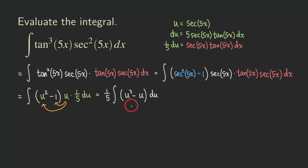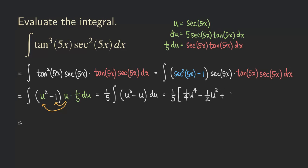We can integrate this easily by reversing the power rule. We get 1 over 5 times (u to the 4th times 1 over 4 minus u squared times 1 over 2) plus a constant. Distributing 1 over 5 gives us 1 over 20 u to the 4th minus 1 over 10 u squared plus C, where C equals 1 over 5 times c1.